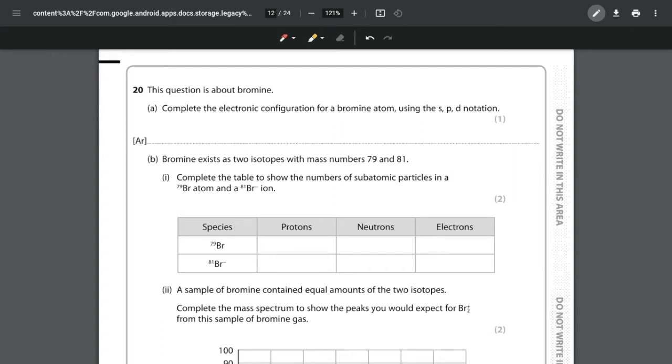We need to complete the electronic configuration for a bromine atom using SPD notation. Notice that they have given us the first part which is Ar, and that tells us that the first section is going to be identical to argon.